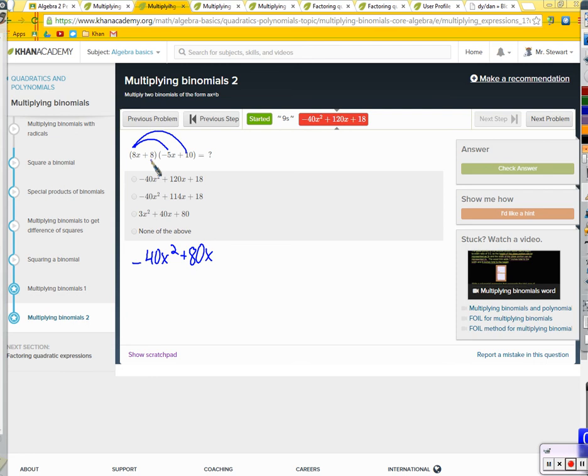Next, I distribute the 8 to the negative 5x. What do I get? Negative 40x. It's an x term. So what I'd like to do now is to put that vertically with the like terms so that I can put those together later. And then 8 times 10, 80 is the only constant around. So here we go. Negative 40x squared plus 40x plus 80. There we are.